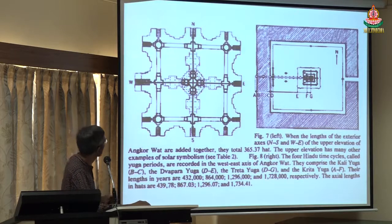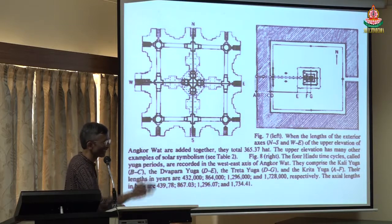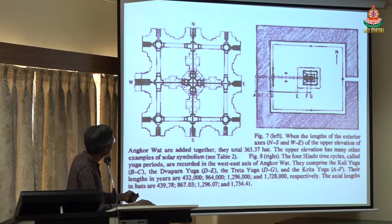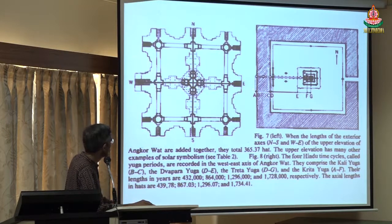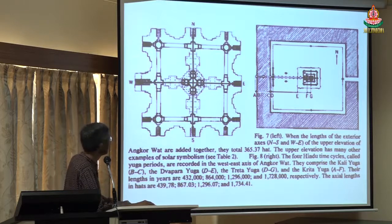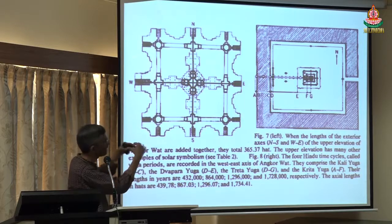If you look at the structure of the whole Angkor Wat complex, if you take the west to east or the north to south measurements and add them, it turns out to be 365 — that is, 365 days in units of a unit called hat. Similarly, if you measure all these distances, they correspond to yuga periods. From A to F is basically the Krita Yuga proportionally, Kali Yuga is from B to C, Dvapara Yuga is D to E — and if you measure the things, you will find that they are in that proportion. So what's happening is that the microcosm — the universe — is represented at a mesoscale, at the temple level.